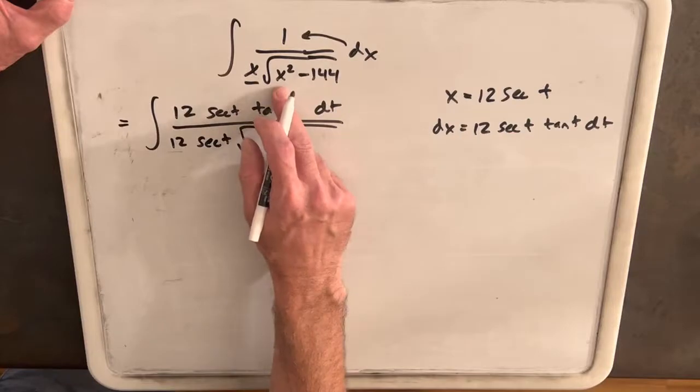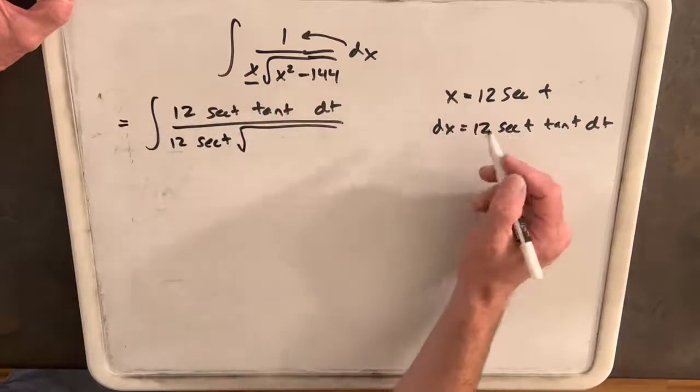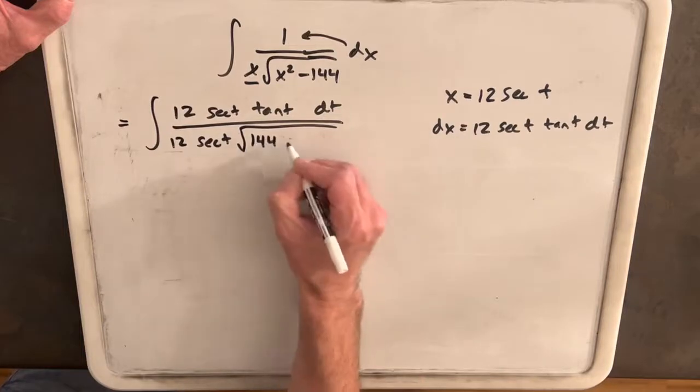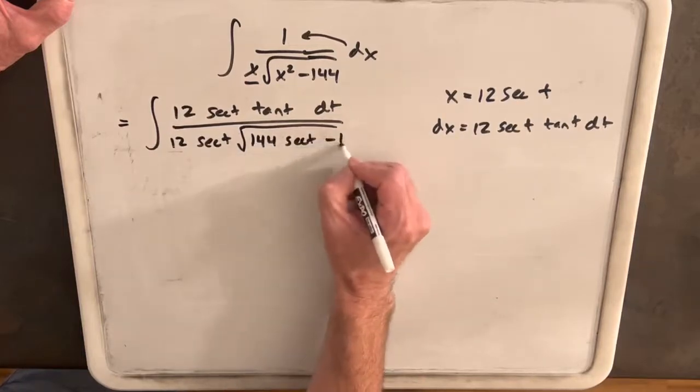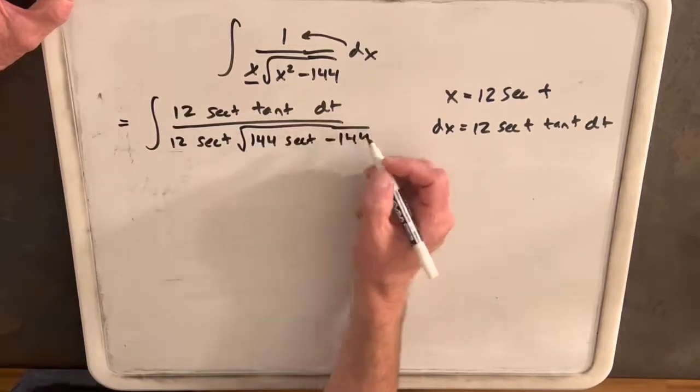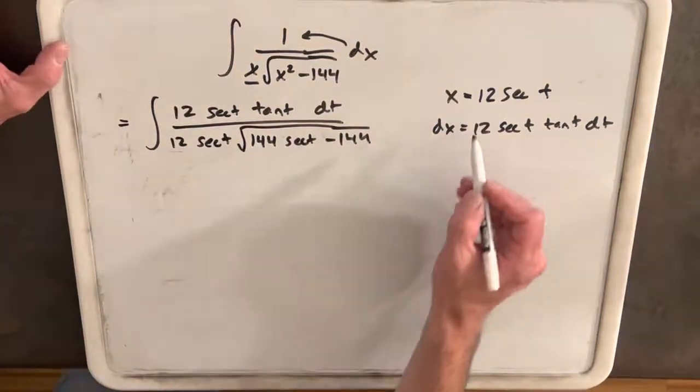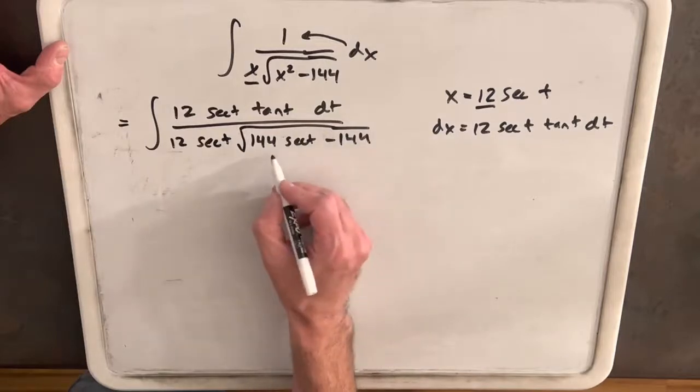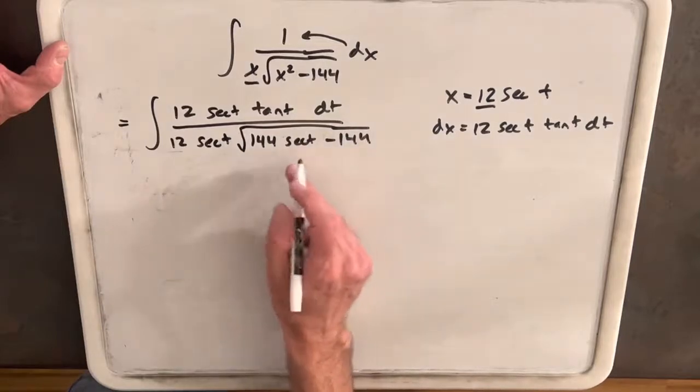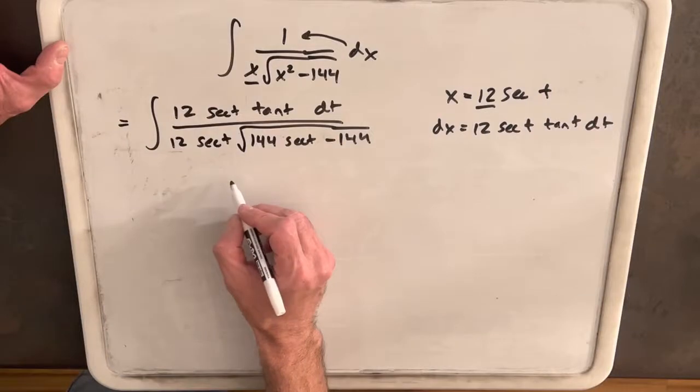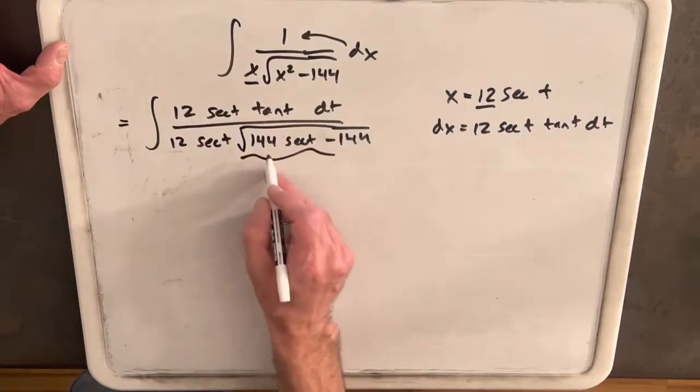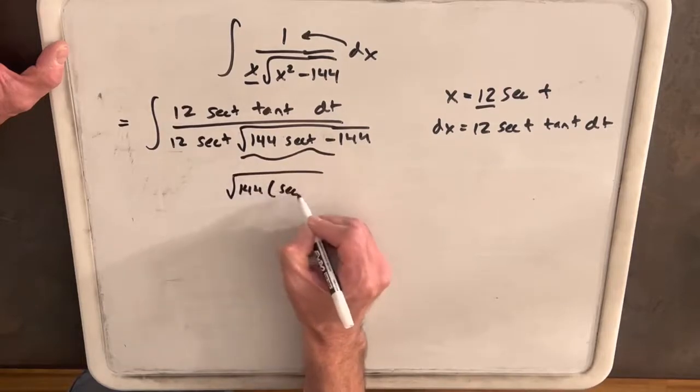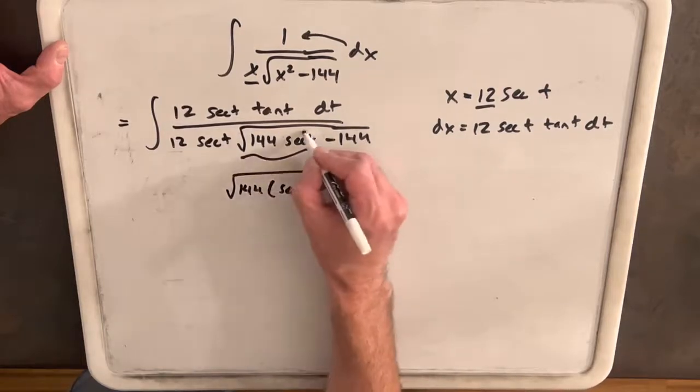Square root, when we square this, is going to be 144 secant squared t minus 144. Now you see why I have this 12 here. We're set up nice for this to factor. Let's rewrite just the square root. We'll factor out the 144 as secant squared t minus 1.